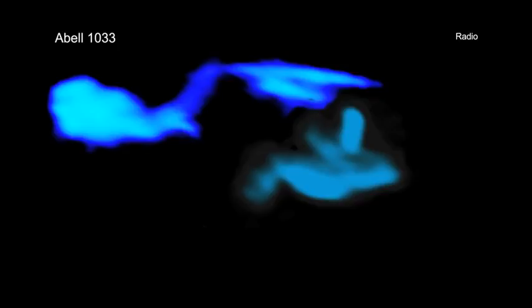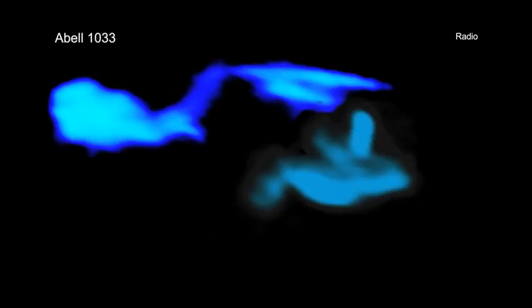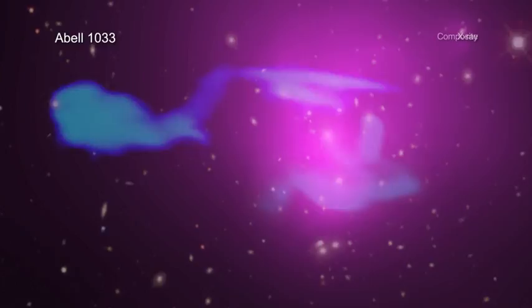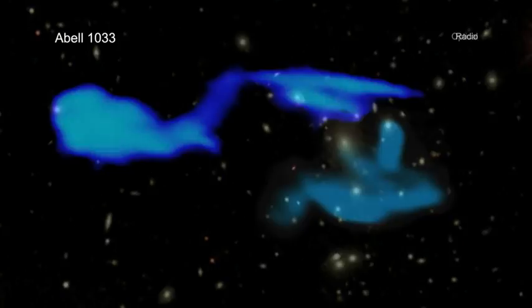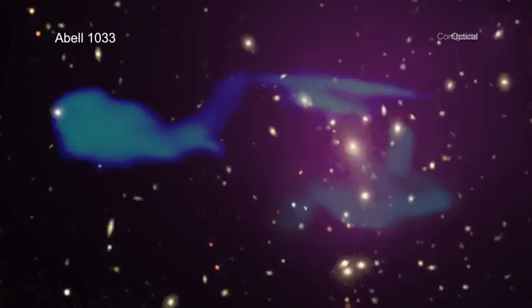By combining X-rays with other types of light, such as radio waves, a more complete picture of these important cosmic objects can be obtained. A new composite image of the galaxy cluster ABEL 1033, including X-rays from Chandra in purple and radio emission from the Low Frequency Array or LOFAR network in the Netherlands in blue, does just that. Optical emission from the Sloan Digital Sky Survey is also shown.